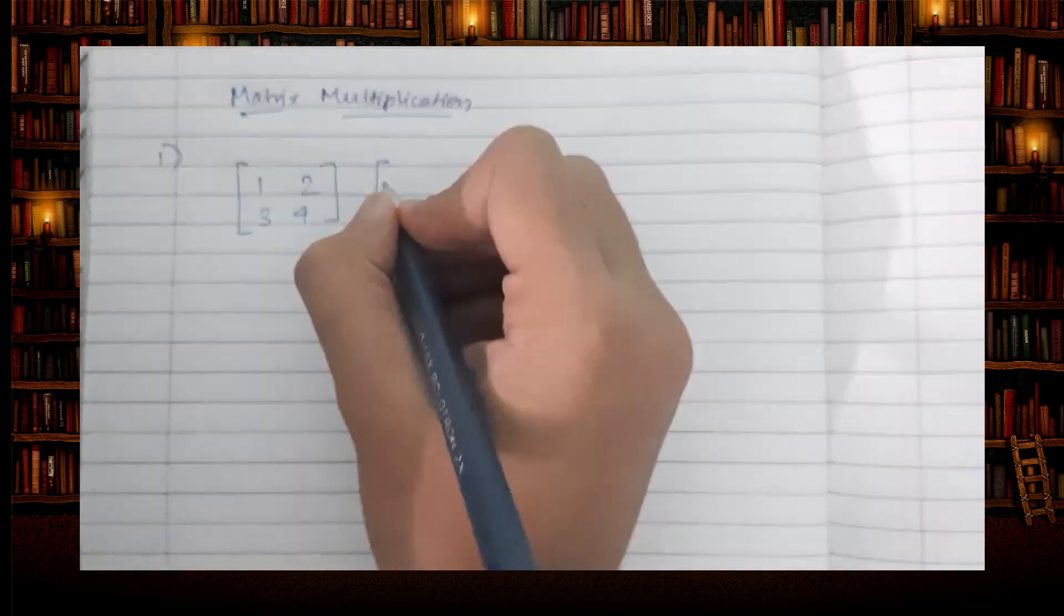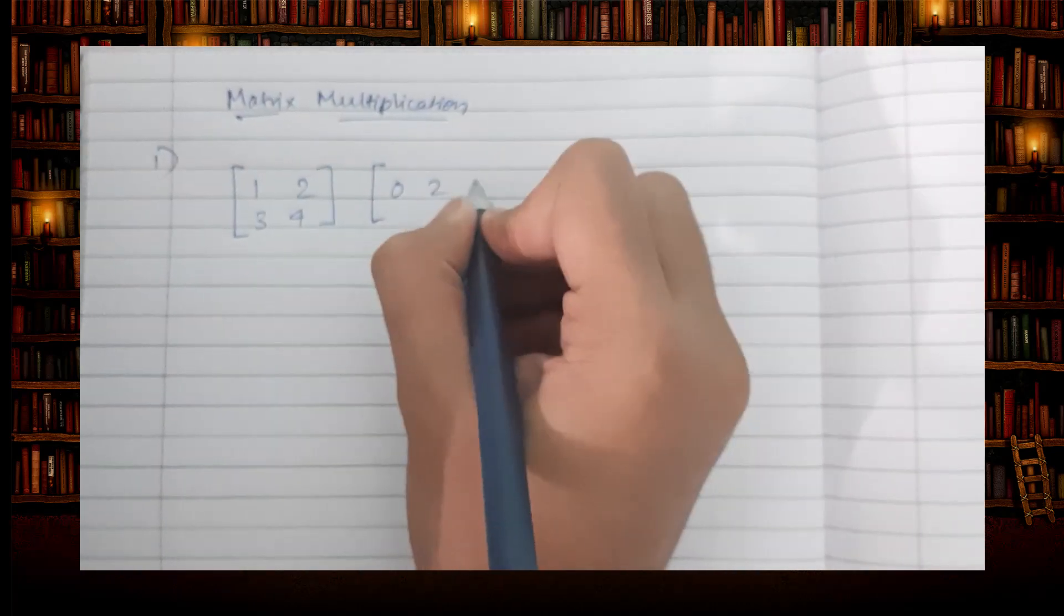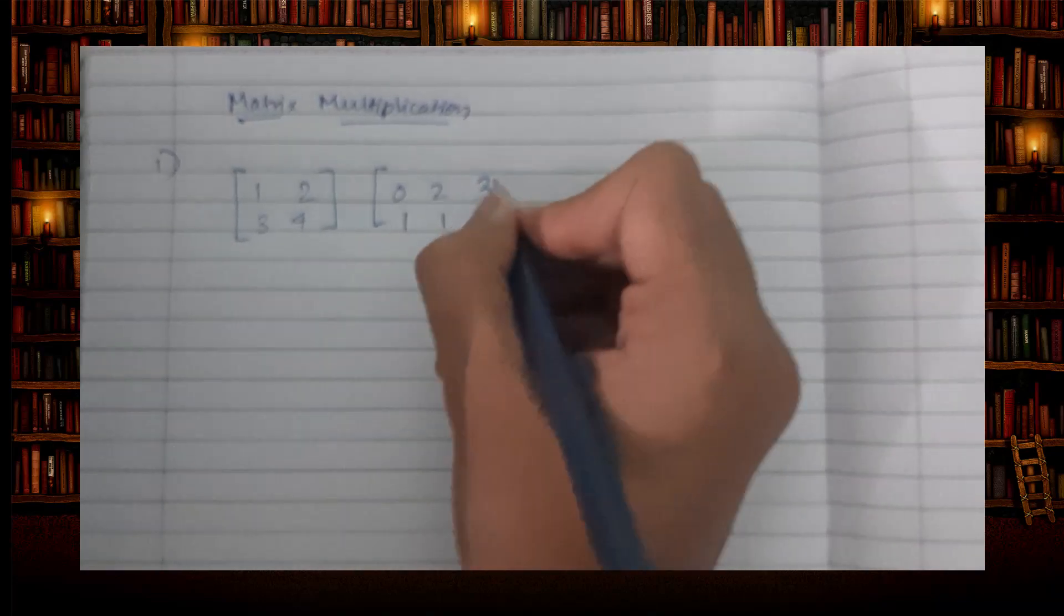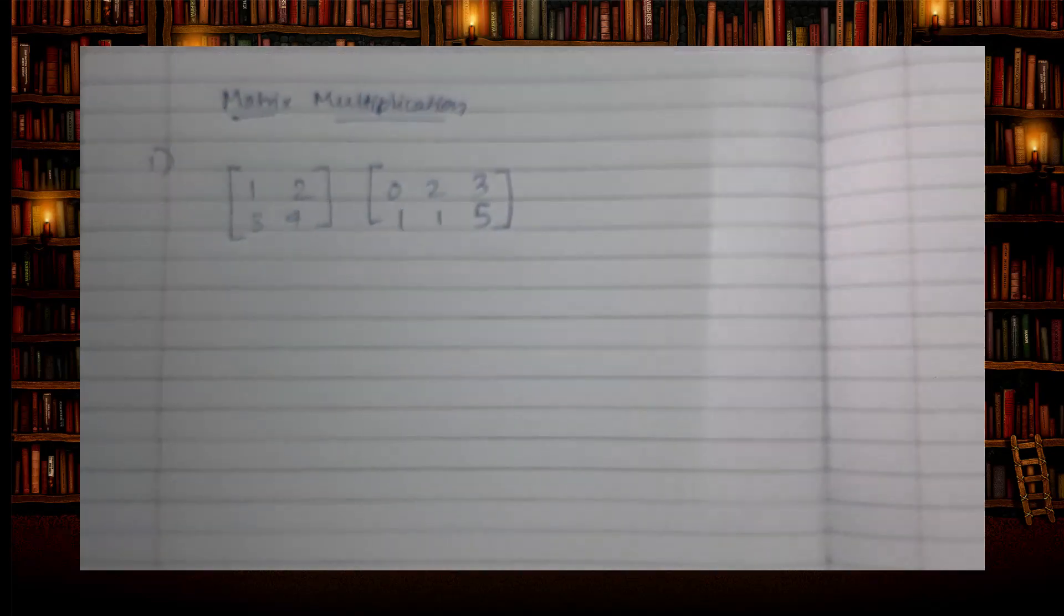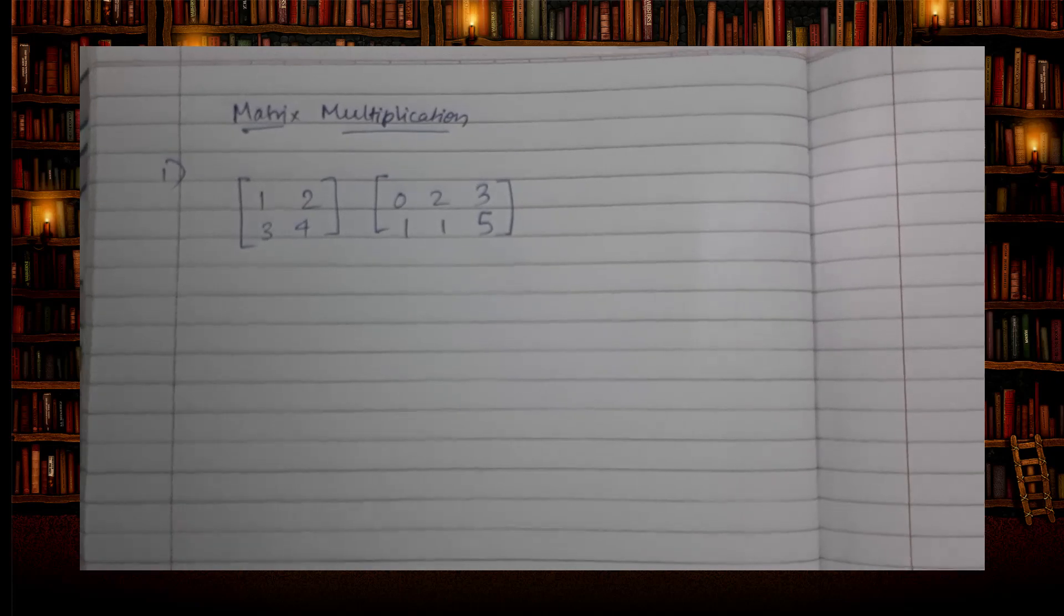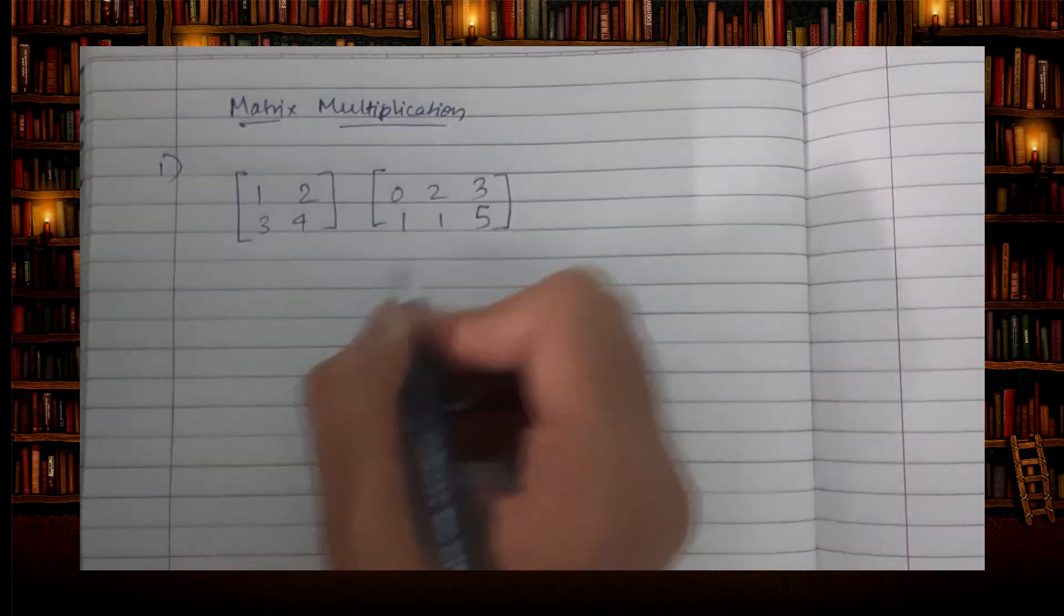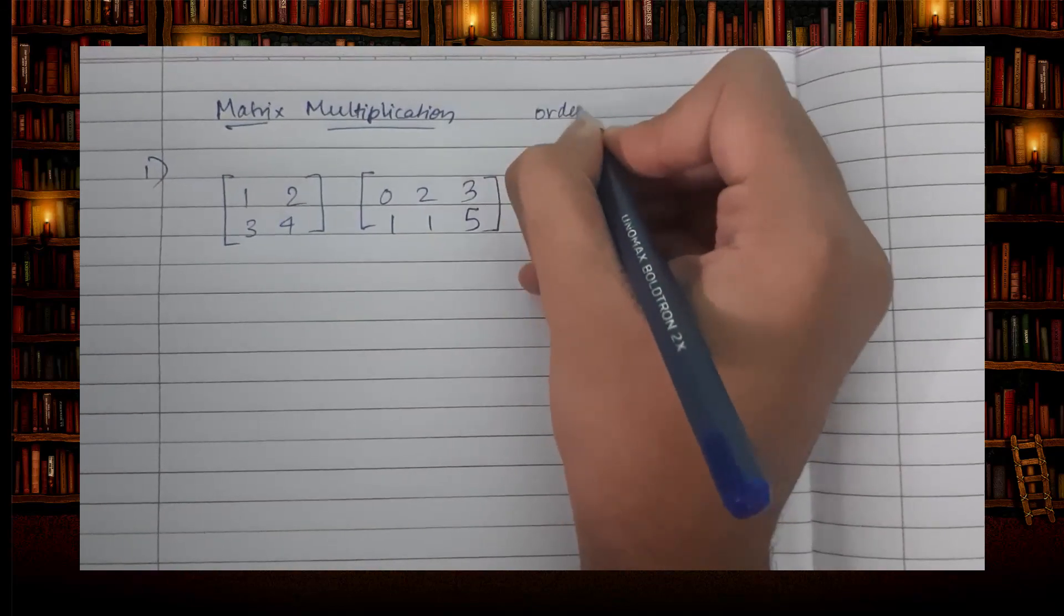So, writing the matrices: [1 0; 3 4] and [2 2 3; 1 1 5]. First, what you have to see in this is you have to find the order of the matrices.